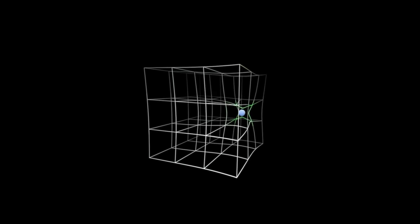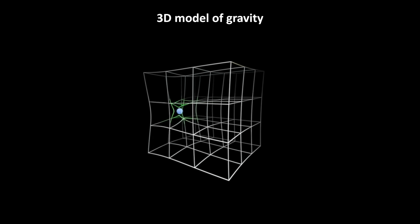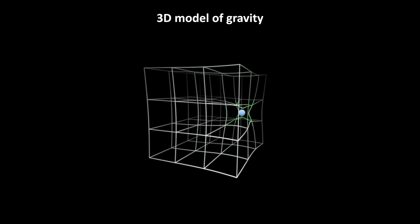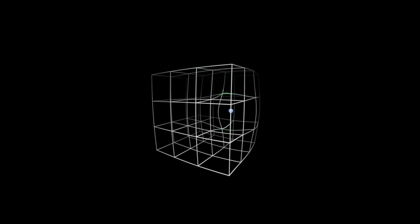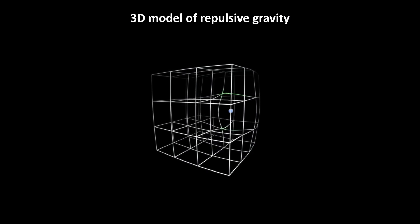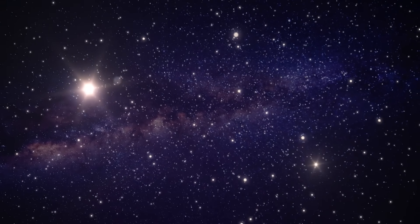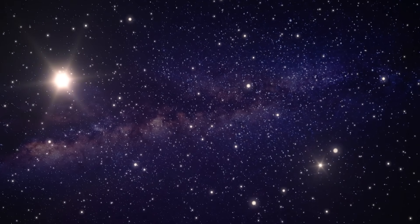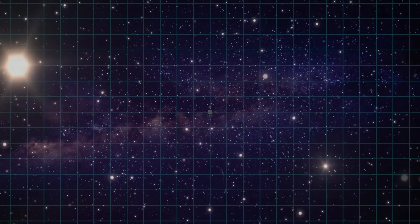But here's where it gets even weirder. If mass curves space, why couldn't there be things that curve it in the opposite way, pushing rather than pulling? This question is not as outlandish as it sounds. It might, in fact, be the only way to explain the current state of our cosmos.